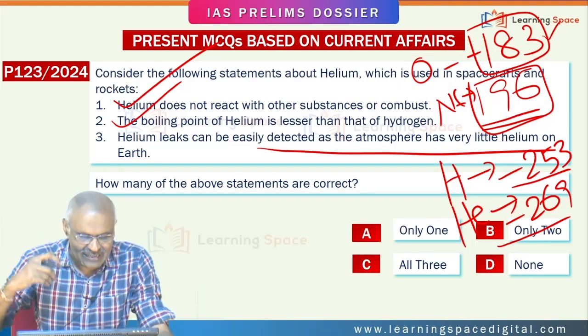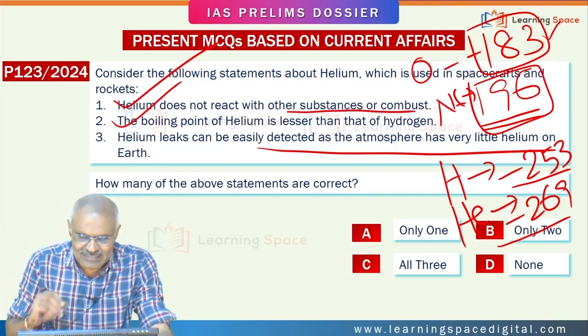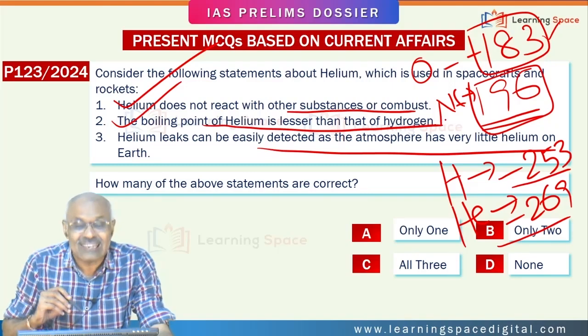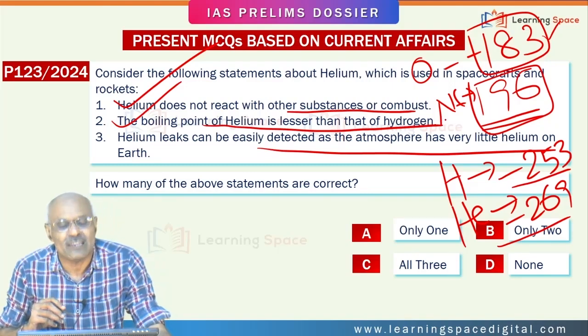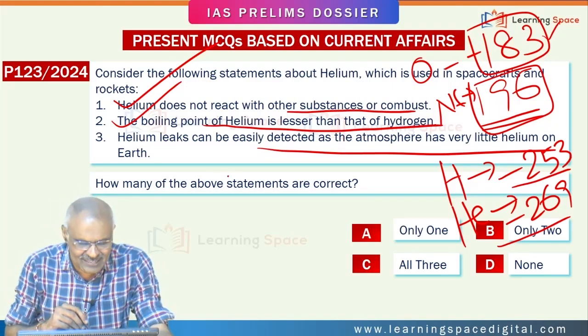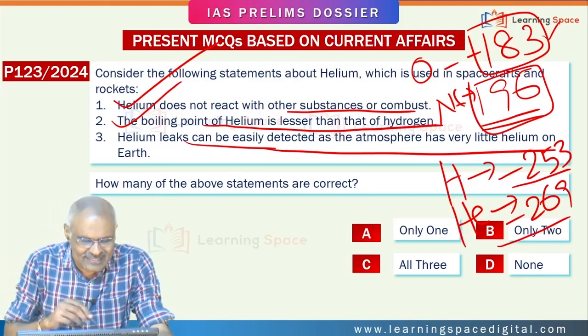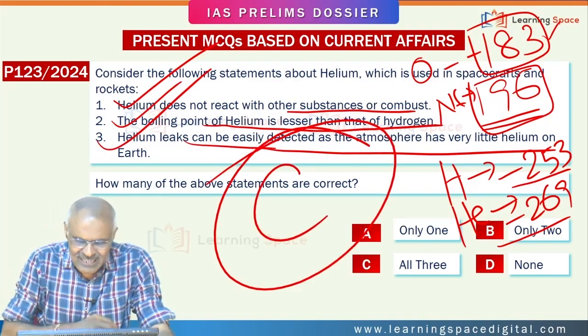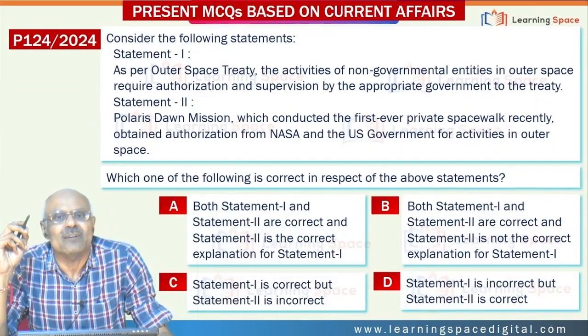Helium does not react with other substances — correct. The boiling point of helium is lesser than that of hydrogen — correct. Helium leaks can easily be detected — correct. All three statements are correct, so option C is the right answer.